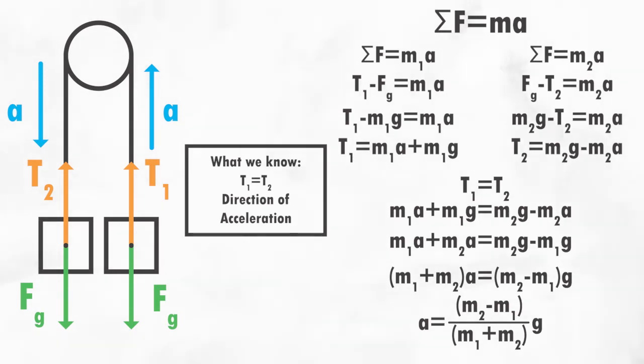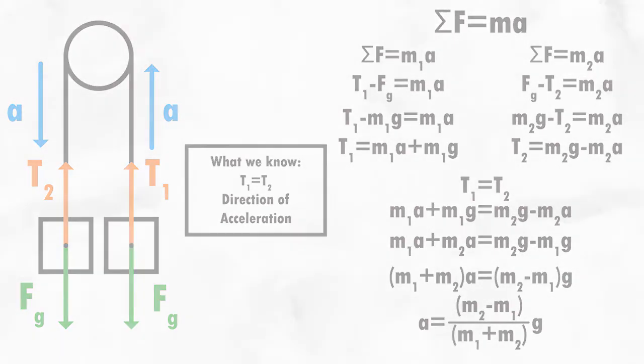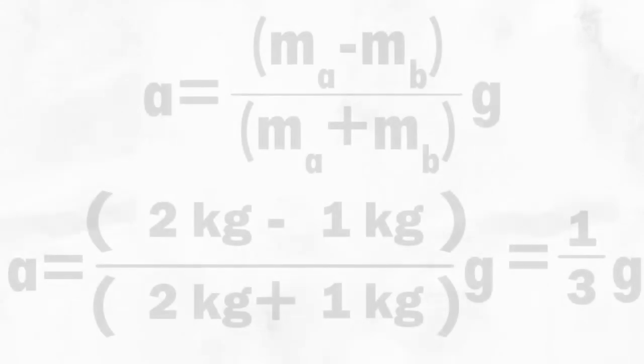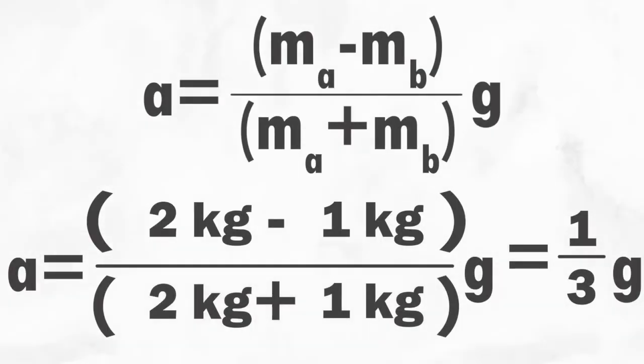So what does this tell us? Conceptually, this reveals that the greater the relative difference between mass A and mass B, the larger the acceleration.